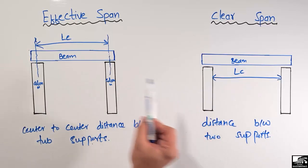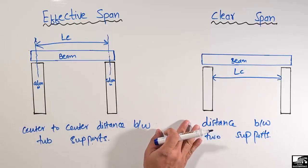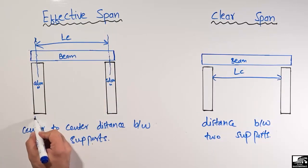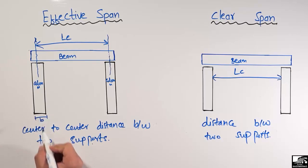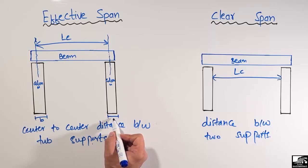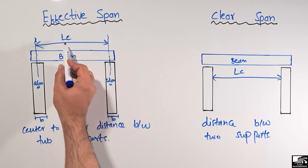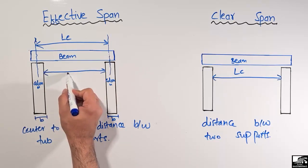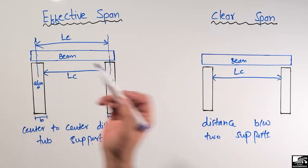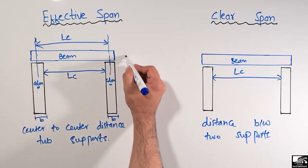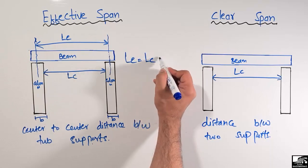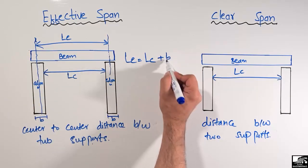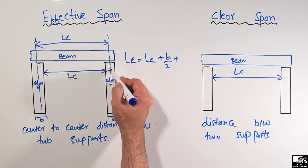Now, what is the effective span for this beam? If we consider the column width as b on both sides, the effective length will be equal to the clear length plus b/2 on one side plus b/2 on the other side. That is because in the effective length we add half of the support width on each side.